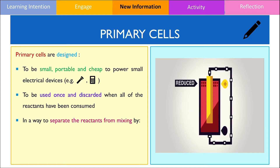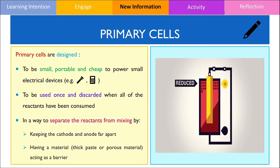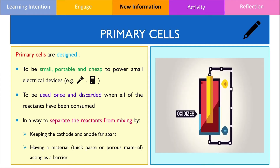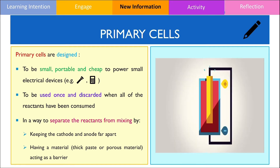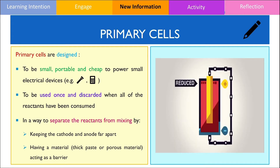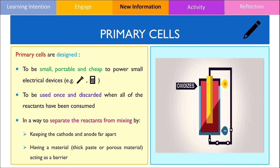This is achieved by separating the cathode and anode. We also need to have a material that acts as a barrier between the site of oxidation and reduction. This prevents the reactants from mixing directly and giving off thermal energy instead.